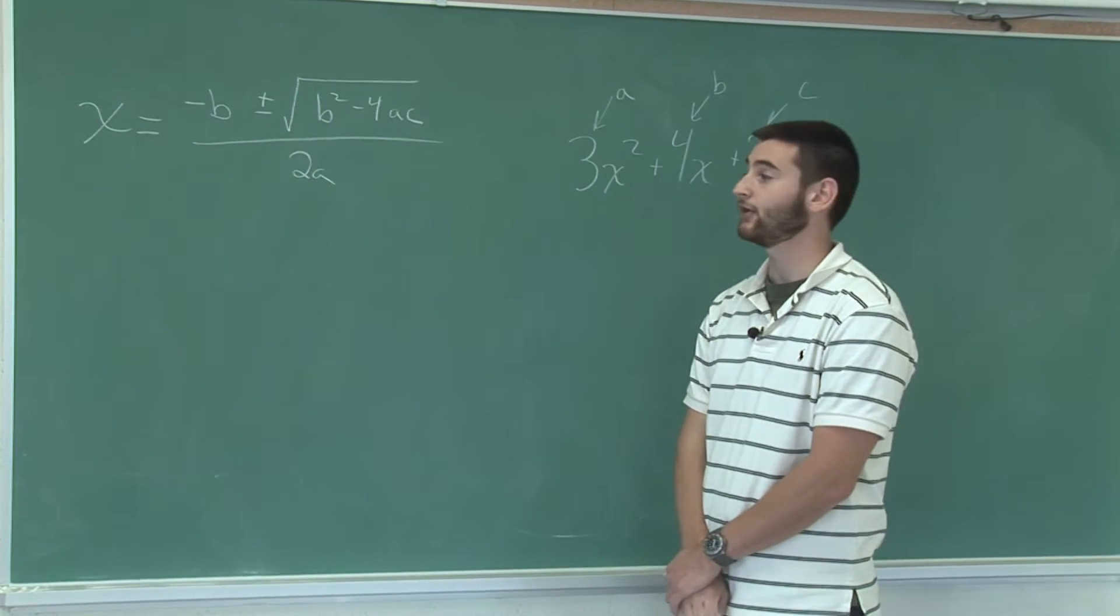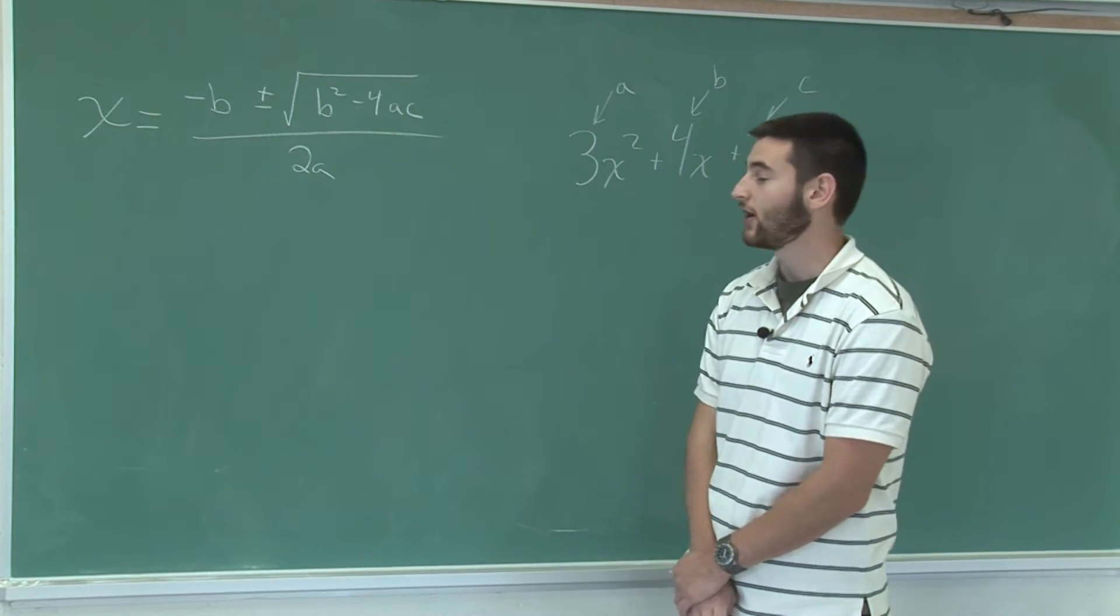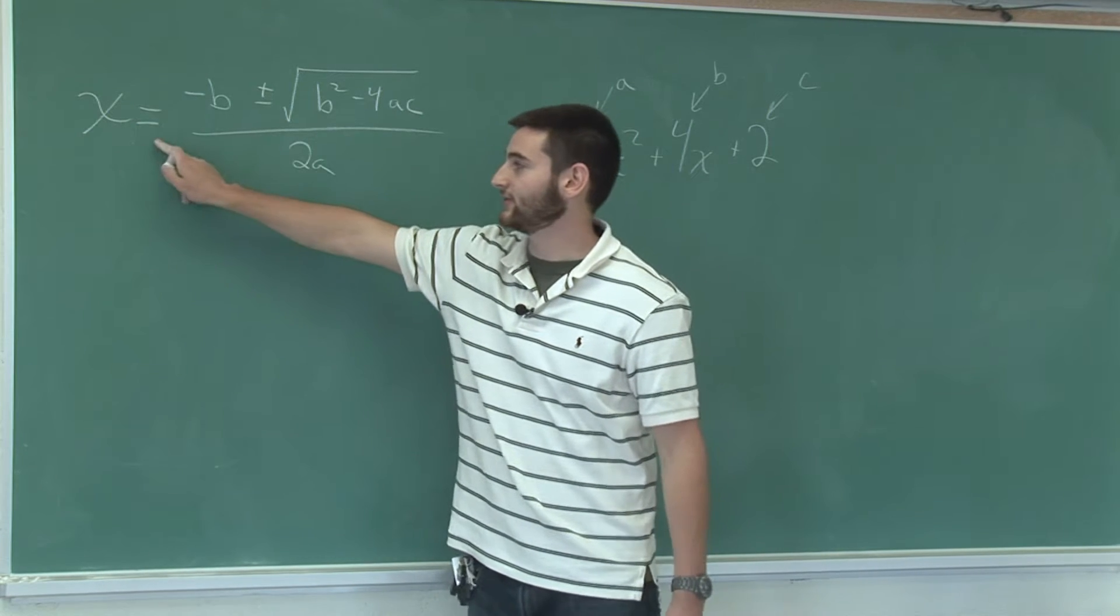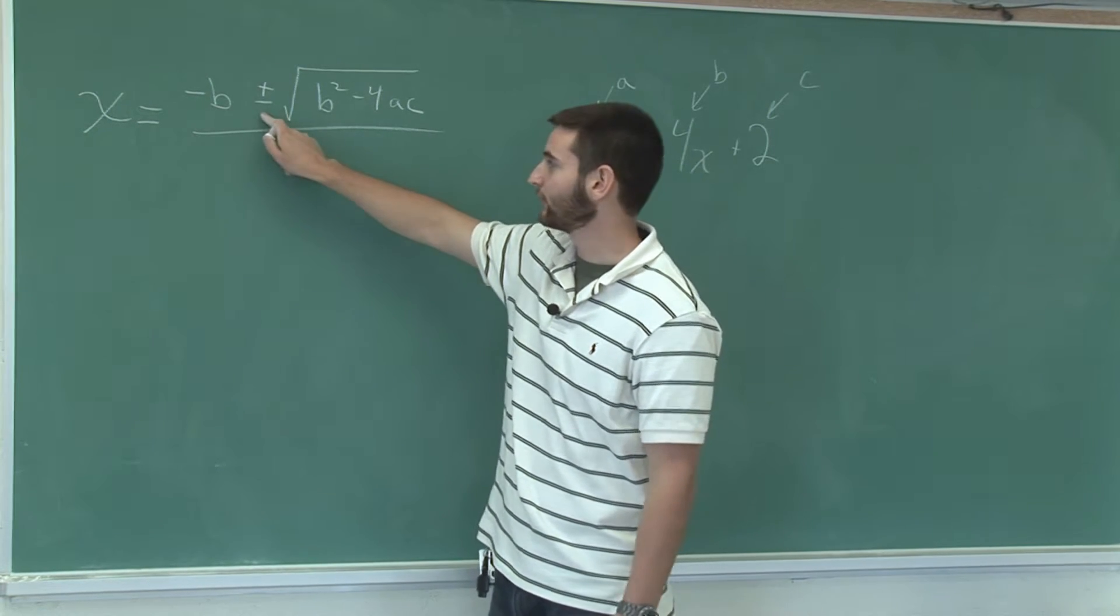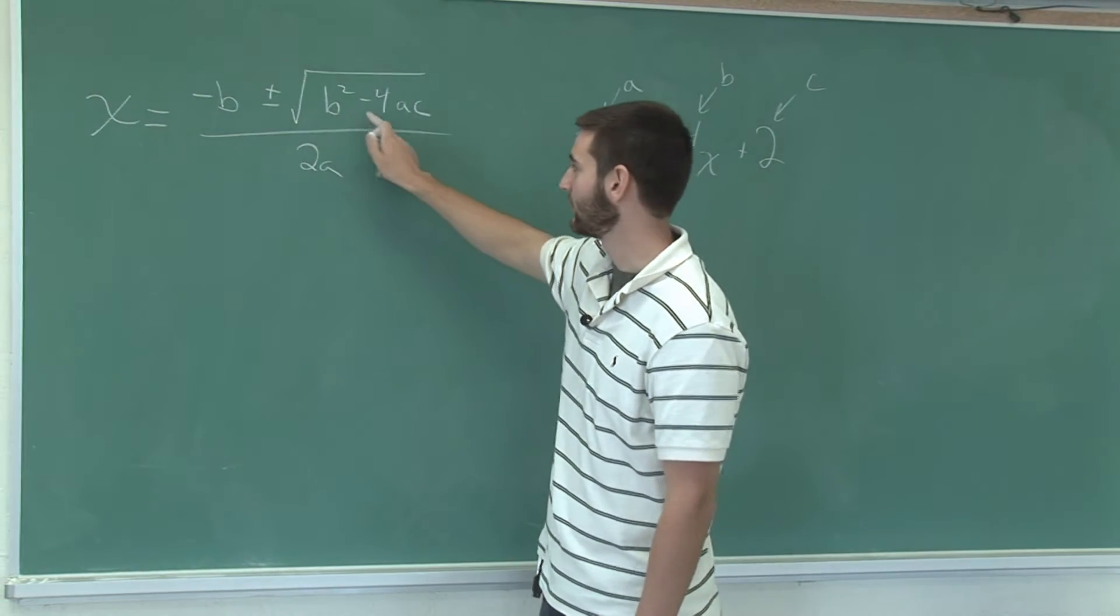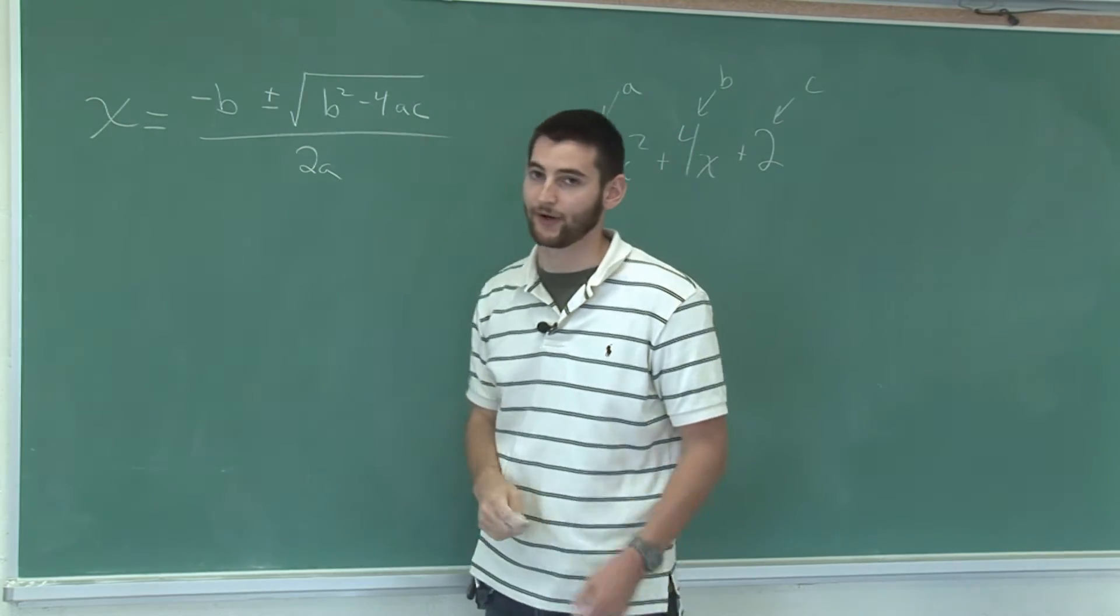Now I'm going to show you how to solve a polynomial using the quadratic formula. The quadratic formula is x equals the opposite of b plus or minus the square root of b squared minus 4ac all over 2a.